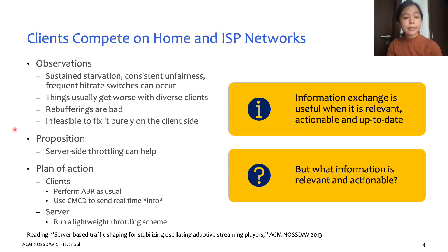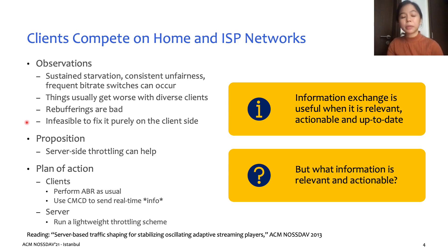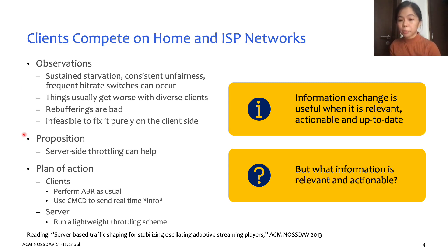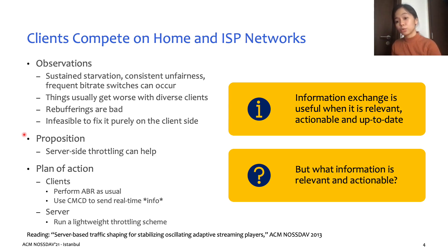This is a summary of the observations we made based on the target scenario discussed earlier. Based on these observations, what can we do to mitigate this challenge? While the client can work hard to optimize its streaming performance through adaptive bit rate and other streaming strategies, we realized that there are also several things the server can do to help alleviate the problems faced by competing clients, such as server-side throttling.